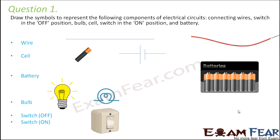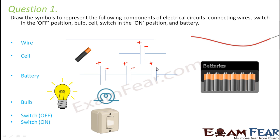For wire we use straight lines. For cell we use two vertical lines — the positive terminal represented by the longer line and the negative terminal represented by the shorter line. Battery is a combination of cells such that the positive terminal of cell 1 is connected to the negative terminal of cell 2 and so on. The bulb is represented with its standard symbol. Switch in off condition shows an open circuit where current doesn't flow, and switch on shows a closed circuit where current flows.